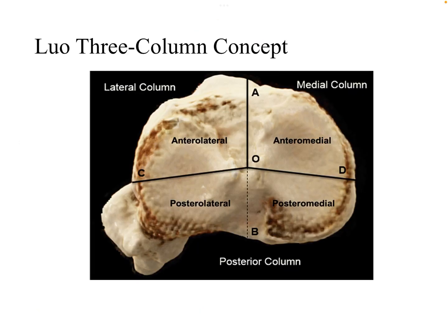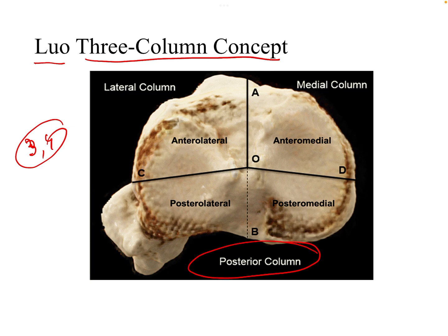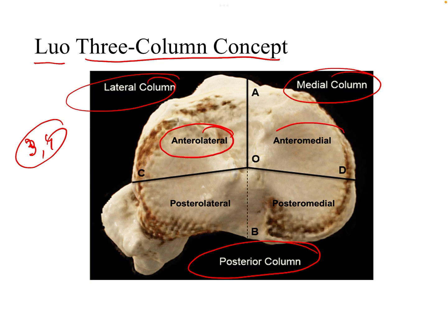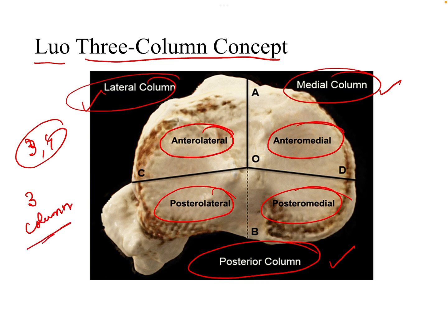A recently introduced system is Lowe's 3-column concept. In axial section, the tibial plateau is divided into 3 or 4 parts. The three columns are the posterior column, lateral column, and medial column. These can be further subdivided into anterolateral, anteromedial, posterolateral, and posteromedial regions. Fractures are classified depending on how many columns are involved: a lateral column fracture, a lateral and medial column fracture, or a 3-column fracture involving all three columns.